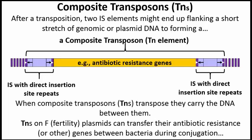When found on an F or fertility plasmid, antibiotic resistance genes can be transferred during conjugation, which is a kind of mating that occurs between compatible bacterial mating types. Subsequent transposition of the TN from the plasmid to the bacterial genome after conjugation would be facilitated by the products of the transposase and resolvase genes in the IS regions of the TN element. These are in fact principal pathways for the transfer and spread of antibiotic resistance between bacteria.